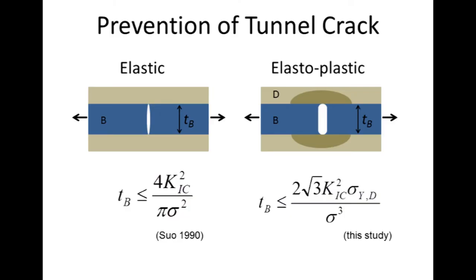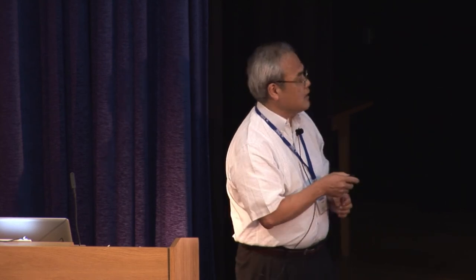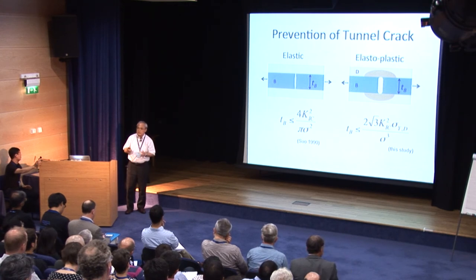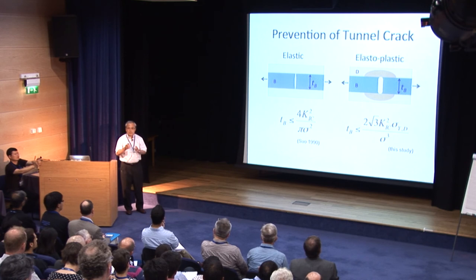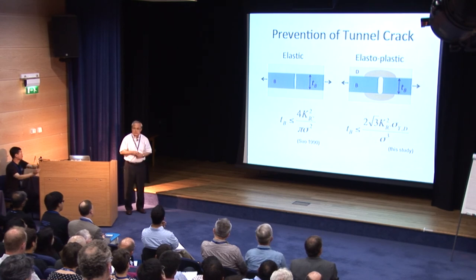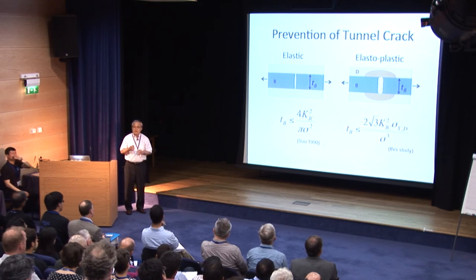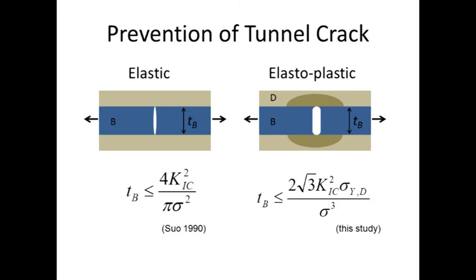For the prevention of tunnel cracks, there is also work from semiconductor research where the thickness of the brittle layer is limited as a function of the fracture toughness of brittle layers. You need to reduce the thickness of the brittle layer to avoid tunnel cracks. However, that criterion was derived for an elastic situation. In metals, there is a plastic zone in ductile layers near the tunnel crack. Considering the elastic-plastic situation, we derived a new criterion: the thickness of the brittle layer should be reduced to increase elongation, as a function of fracture toughness of the brittle layer and yield strength of the ductile layers.